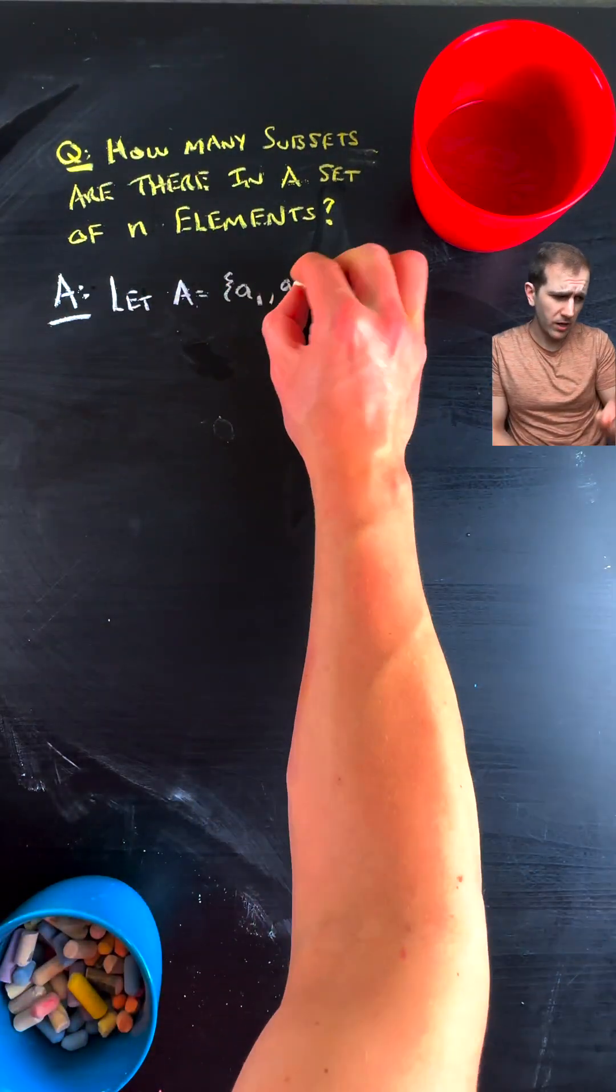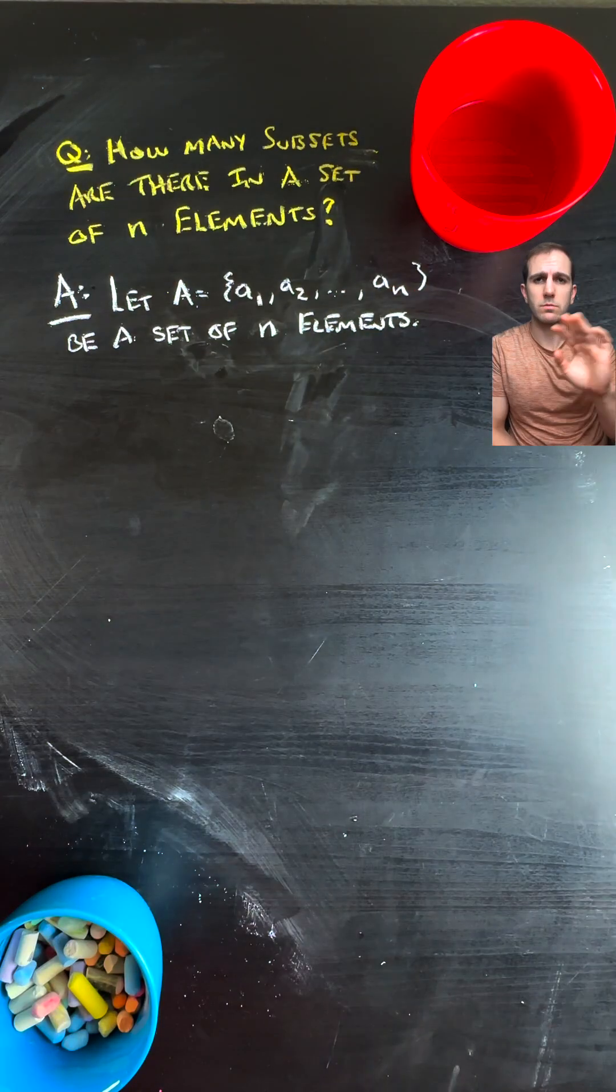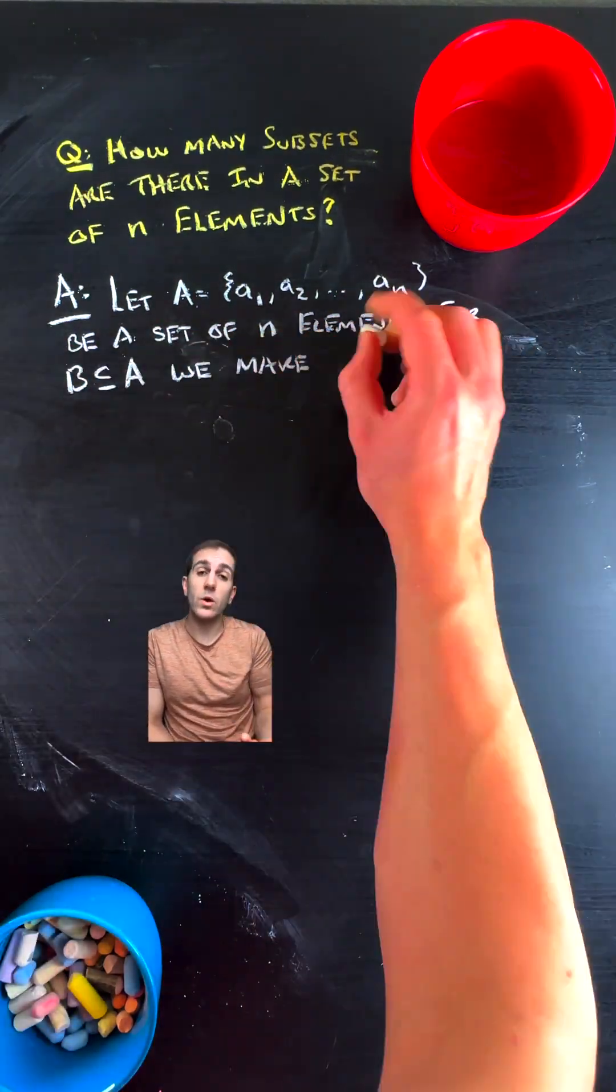This is actually fairly quick. It's just a little bit of a combinatorics slash counting argument. So what do we do?